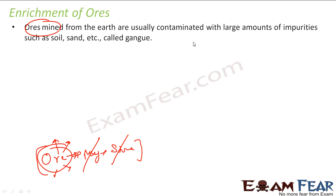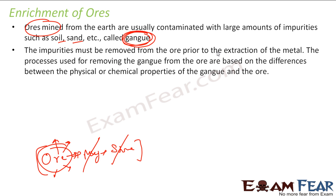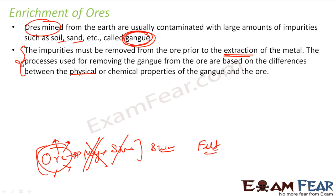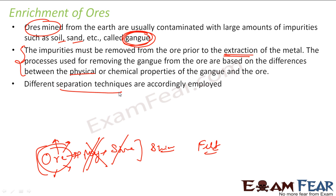The ores mined from the earth usually have impurities like soil and sand, and they are called gang. These are the impurities. Impurities in the ores are called gang. So this has to be removed before we start the chemical process — before we start extraction of the metal. These are removed based on the physical property. For example, sometimes you crush the ore and then use a sieve to filter it, or sometimes you dissolve in water since the mud dissolves in water. These physical processes take advantage of the physical property of the ore to remove the gang. So this process is called enrichment, where we remove the impurities from the ores. Different separation techniques are applied accordingly based on the ores.